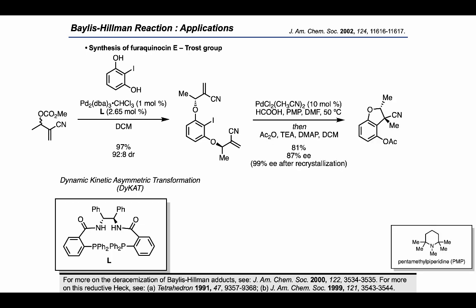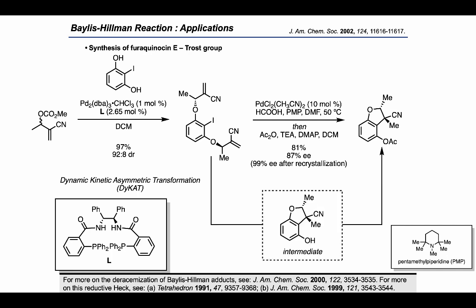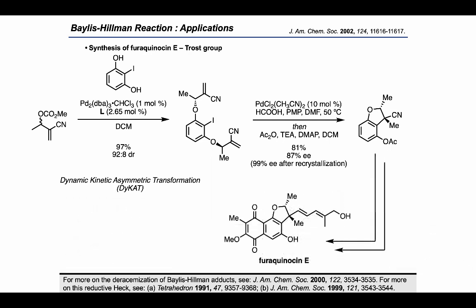Then, by using a reductive Heck reaction, they were able to cyclize and form a five-membered ring on one side, while the free phenol released on the other side could be protected as the acetate. This product bearing two adjacent stereocenters with good enantio-enrichment could be further enriched upon recrystallization, and was carried on to complete the total synthesis of furoquinacin E.